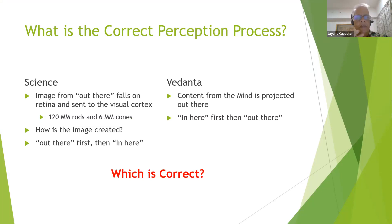What is the correct perception process? Most people will not think about the answer to this question because they're so sure that they've been taught by science right from childhood that the correct perception process is what science is teaching them. And what does science teach about the perception process? It shows that there's an image out there and this image falls on the retina.